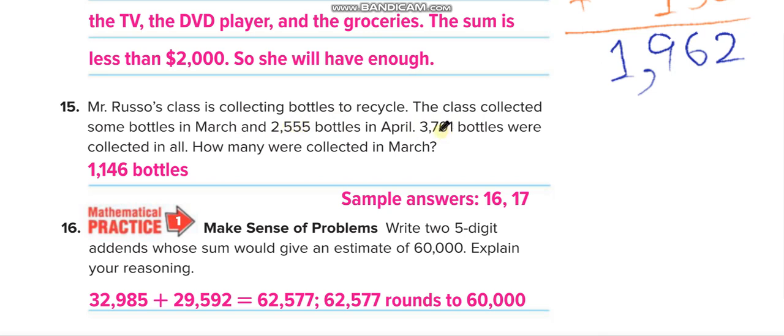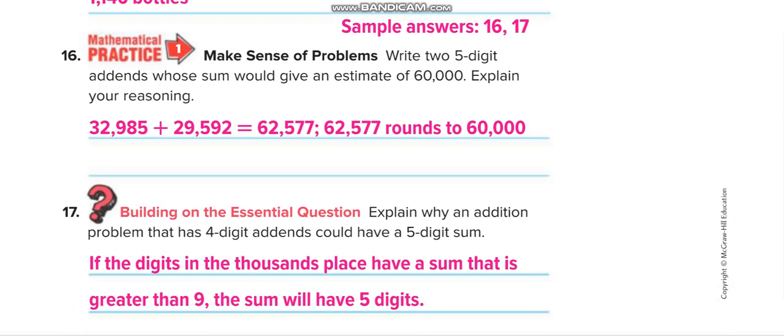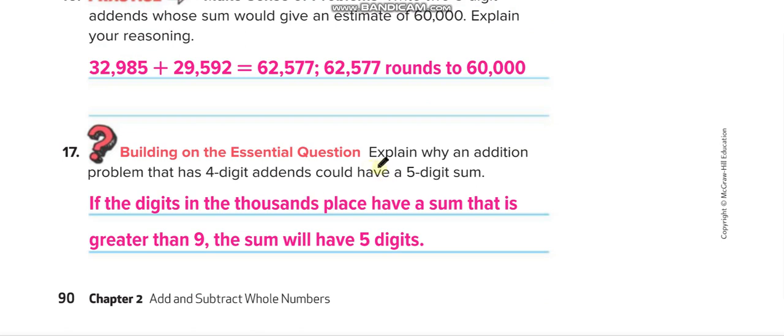Write this one up and this one down, then minus it. Total 1,146. Write two 5-digit addends whose sum would give an estimate of 60,000. If you add these two numbers, you will get 62,000. When you round it, you can get 60,000. Give me another example of this question in the comment box. Explain why if the digits in the thousands place have a sum that is greater than 9, the sum will have 5 digits.